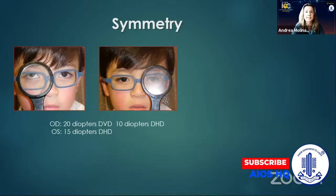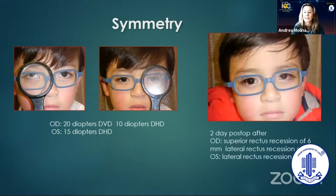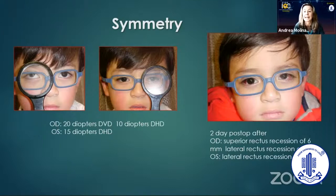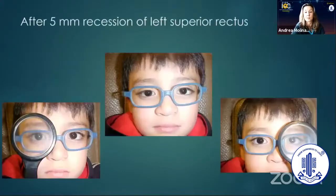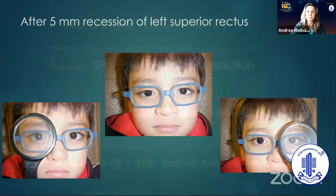On the left eye, I could not elicit any DVD at all, but he had 15 diopters of DHT. On the second day after performing right superior rectus recession and bilateral lateral rectus recession, a DVD on the other eye appeared. That patient had 20/20 vision in both eyes, so this is a specific case where you can see that the patient can shift fixation and a DVD on the other eye can appear. Beware when doing unilateral surgery. In this case, I had to perform a recession of the left superior rectus in order to obtain a better cosmetic result.